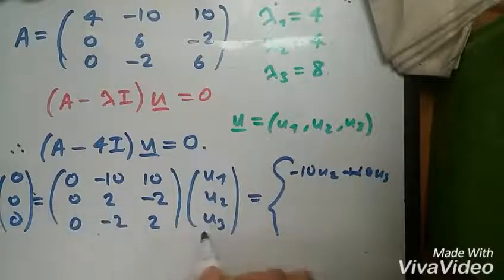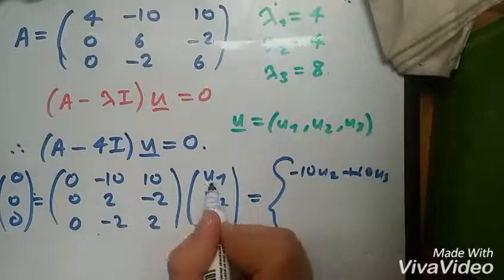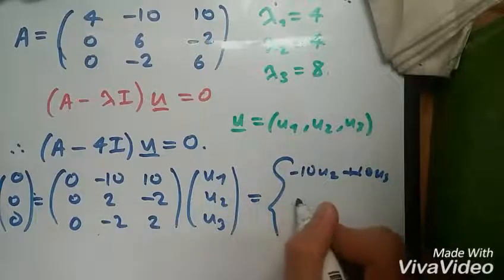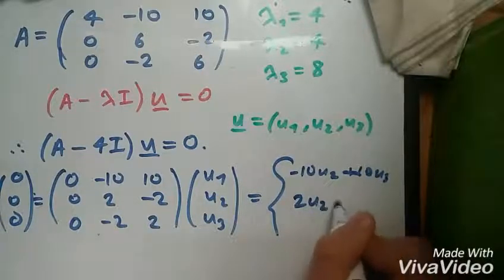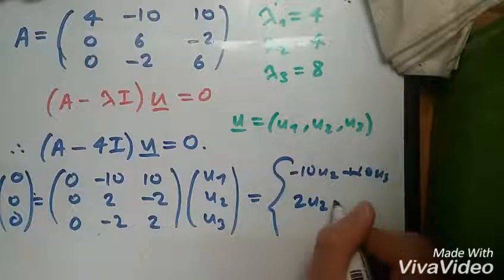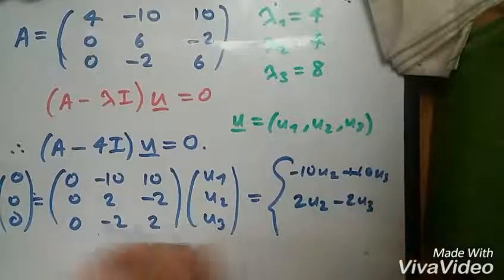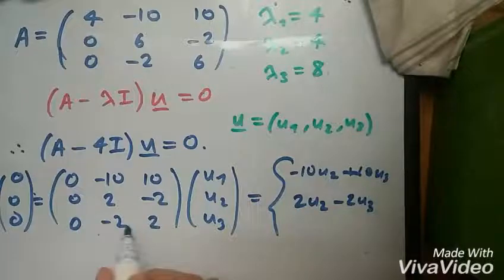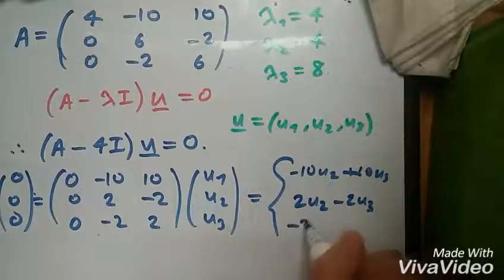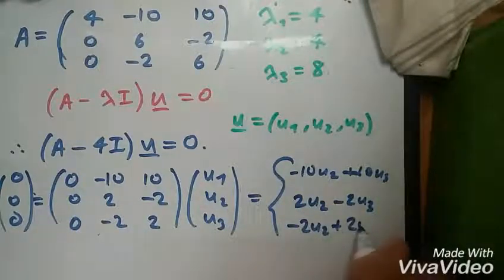This row times this column, so we're going to have, 0 times u1 is 0, 2 times u2 is 2u2, minus 2 times u3 is minus 2u3, and this also equals 0. And lastly, this row times this column will give you minus 2u2 plus 2u3.